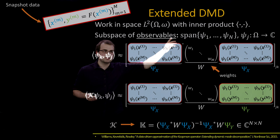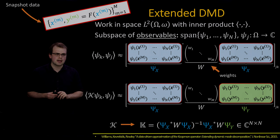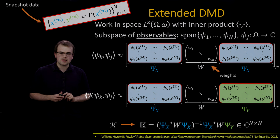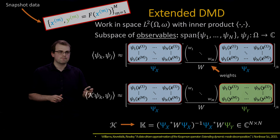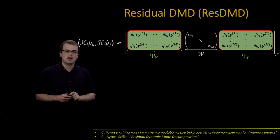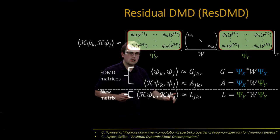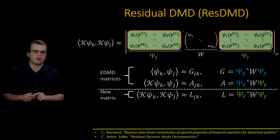The second type of inner product is when you've got K acting on the left here, on one of the observables in the inner product. Here, you simply replace this psi x matrix by its corresponding psi y matrix. Once you've got these two inner products, or these two matrices, you can form your matrix approximation of the Koopman operator with this formula here. DMD will be a special case where the observables are linear. To summarize, the EDMD matrices: you've got G, blue-blue; A, blue-green. For ResDMD, or residual dynamic mode decomposition, you have this third matrix, L, green-green.